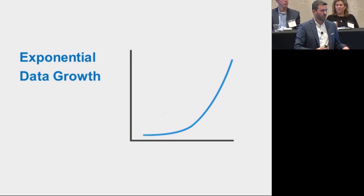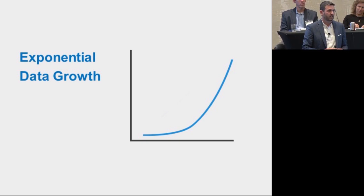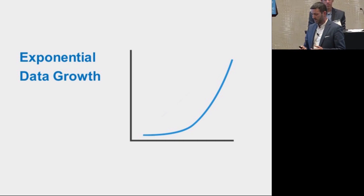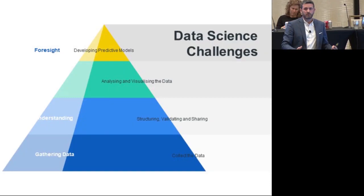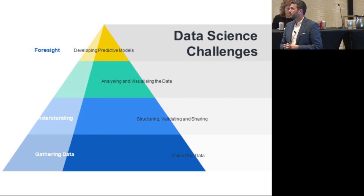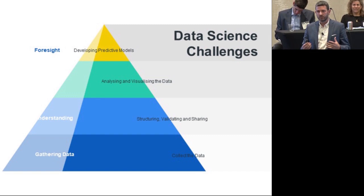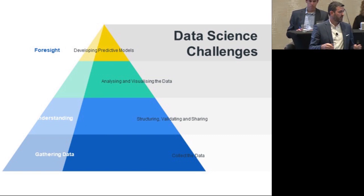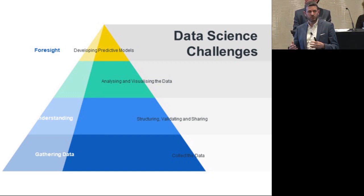This leads to exponential data growth, which is a huge challenge. Some estimates say only 4% of all data that gets generated ever gets analyzed. Because of this rapid growth, even just staying with that 4% is going to be a challenge — but also there's a massive opportunity. The challenges with data science that we've come to recognize over the years: if we want to get to the top of this pyramid of predictive analytics and get real insight and foresight, there's a lot of grunt work at the bottom in collecting and structuring the data.